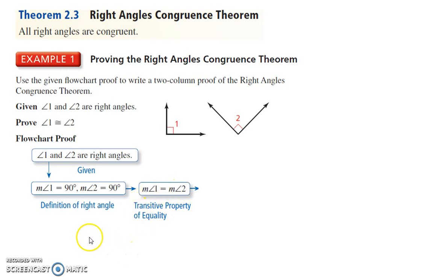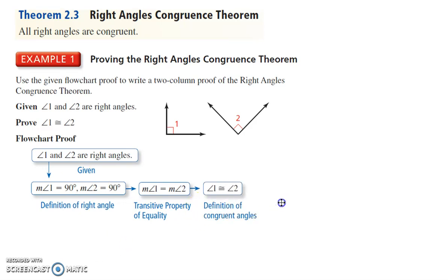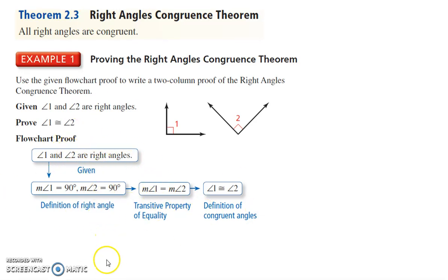That's the definition of a right angle. Then from there I'll state that measure one is equal to measure two — that's the transitive property. If measure one is 90 and measure two is 90, then measure one equals measure two. And by the definition of congruent angles, if their measures are the same, the angles are congruent. So that's what a flowchart proof looks like — basically the same as the two-column, just drawn differently.